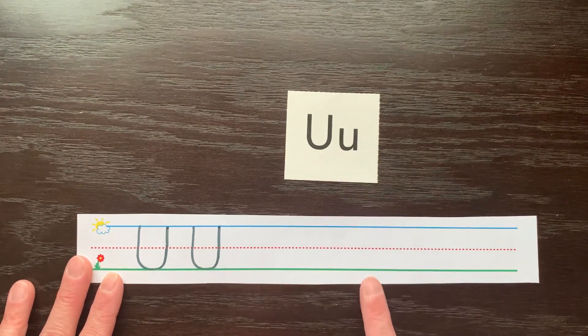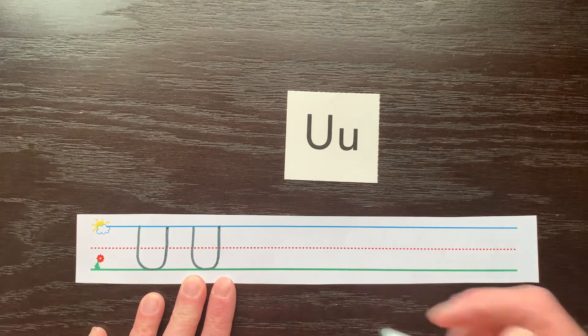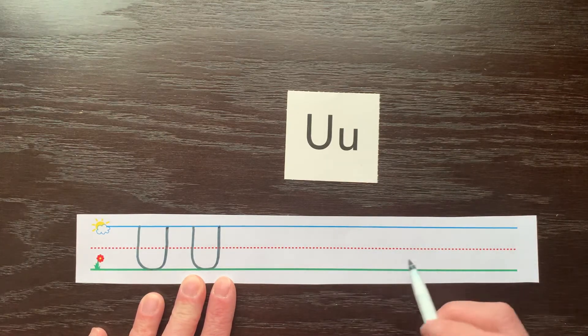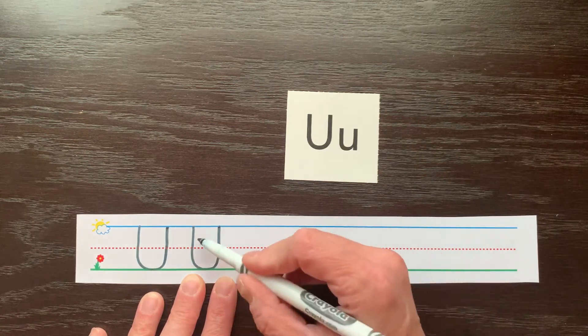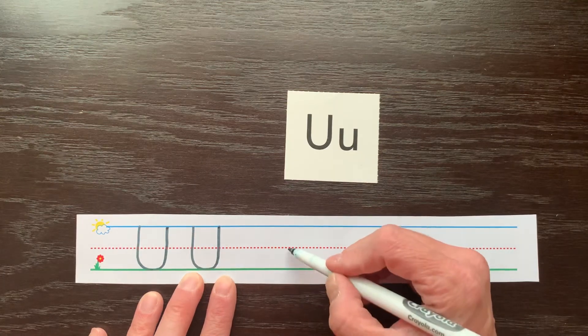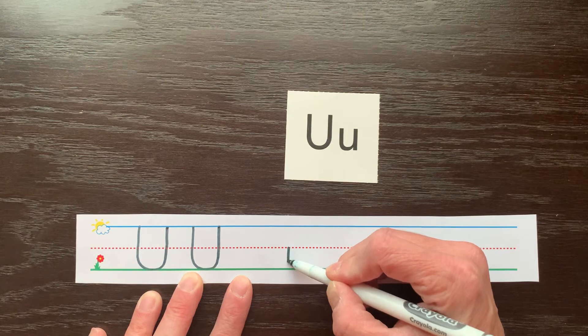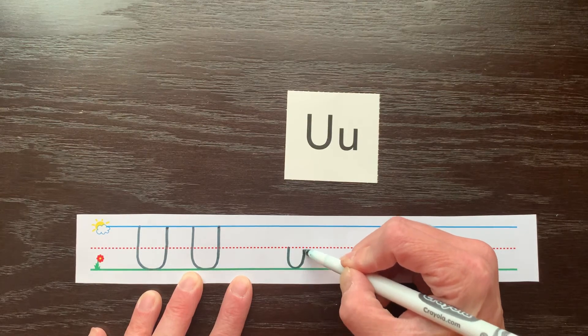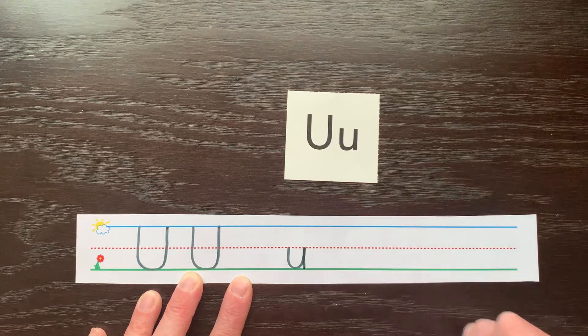Let's talk about lowercase u. It is also a curved letter. You're going to start at the dotted line because lowercase u is a short letter. You start at the dotted line, and you do the same motion as the uppercase or capital U. You start in the middle, you go down, curve back up, but this time when you get back to the dotted line, you're going to go straight down to the ground.